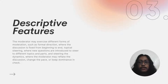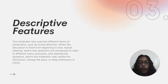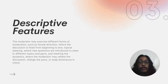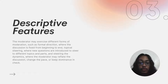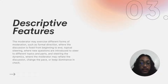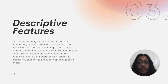Regarding the role of the moderator, the moderator may exercise different forms of moderation. The first is formal direction, where the discussion is fixed from beginning to end and the moderator directs it very rigidly. They can also do topical steering, where new questions are introduced to steer discussions to different topics. The moderator also steers group dynamics — for example, by reflating the discussion, changing its pace, or keeping dominance in check when a single person is dominating the discourse.